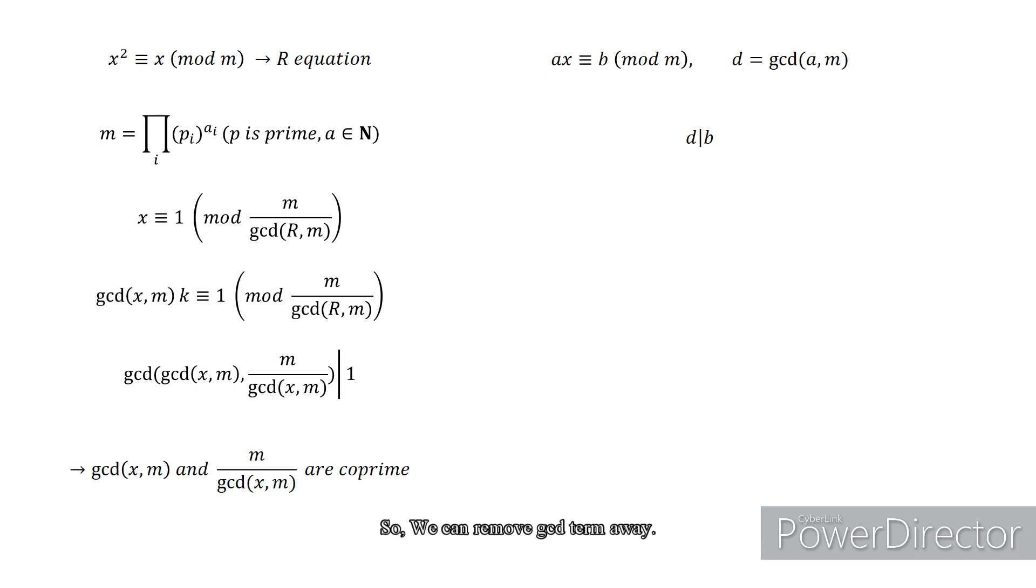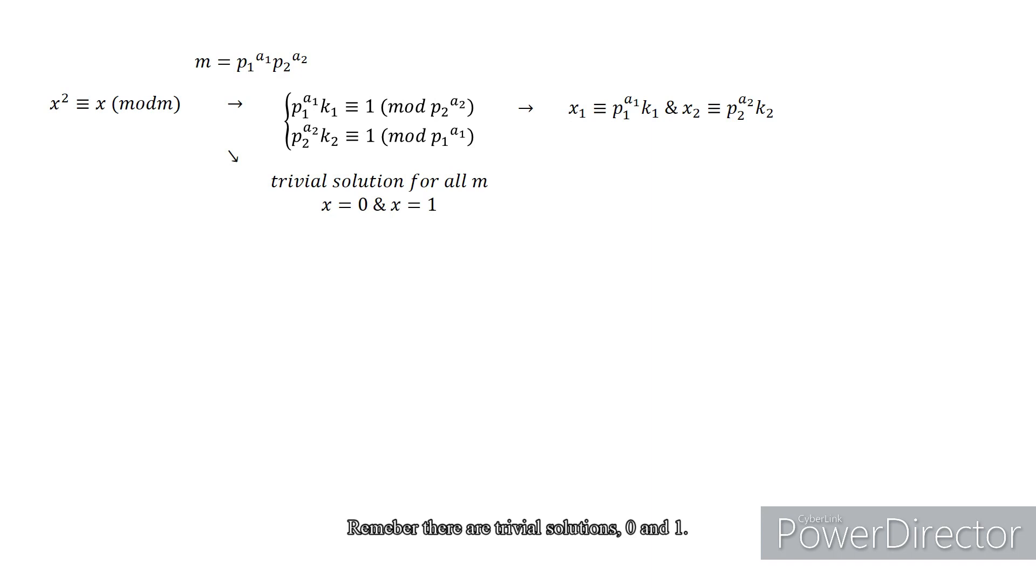We can remove the gcd term away. For example, if m has this form, our equation will be two linear congruence equations. Remember there are trivial solutions, 0 and 1.